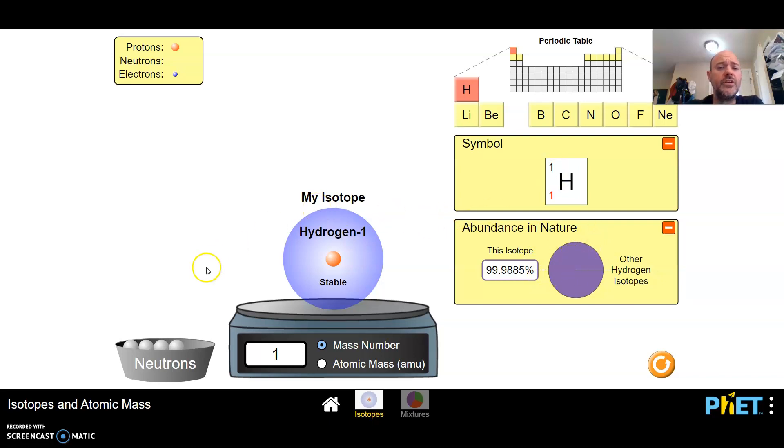As you do this you can go through and you can build different isotopes of hydrogen by taking the neutrons and adding it to it. So hydrogen two is another isotope of hydrogen. It's got a mass number of two because it has one proton and one neutron.